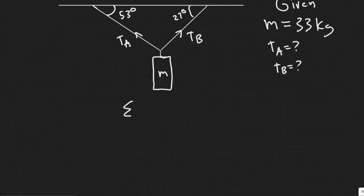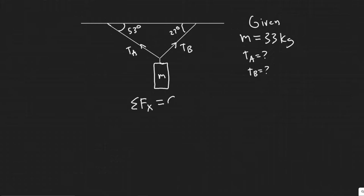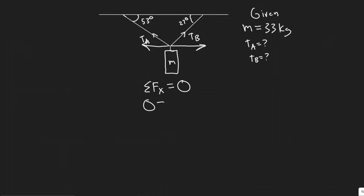We're going to start by summing the forces in the x direction. The x refers to any force acting horizontally, and the y refers to forces acting vertically. When I sum the forces in the x direction, I know it's going to be equal to zero. The reason is because this thing isn't moving, so the forces pointing right have to equal the forces pointing left.